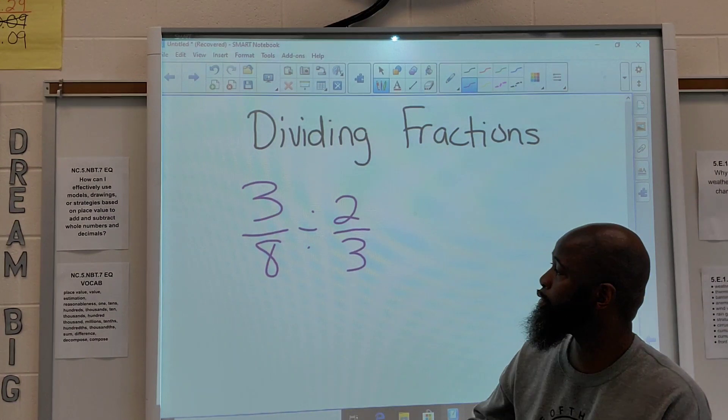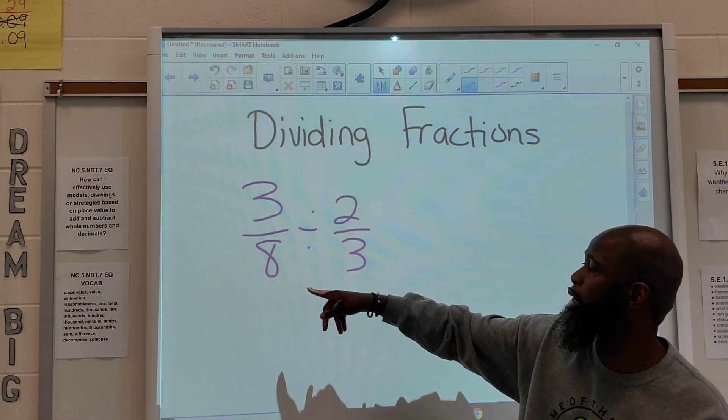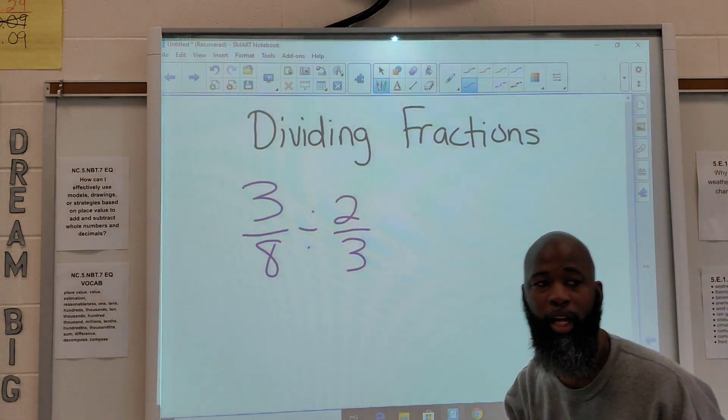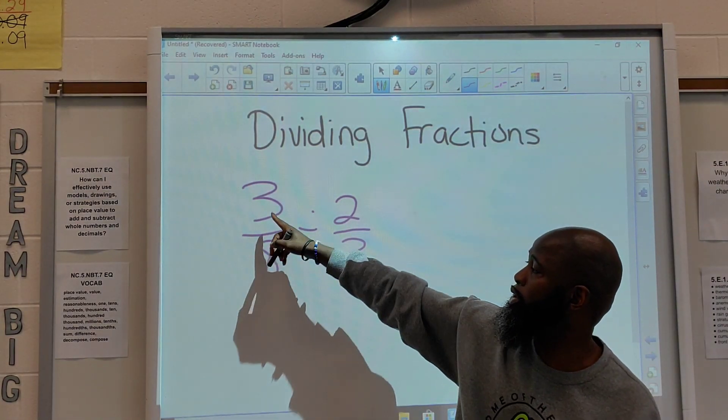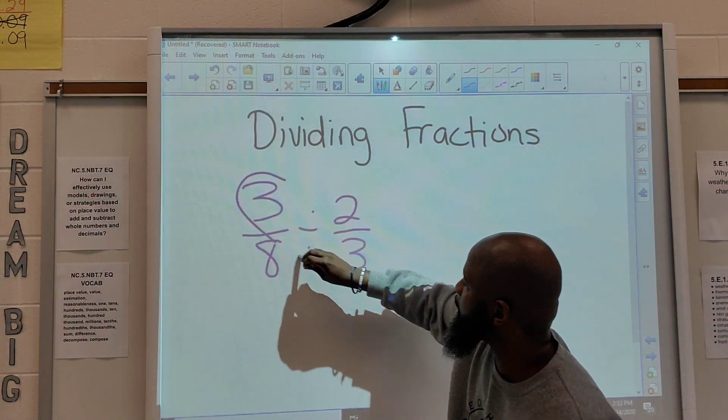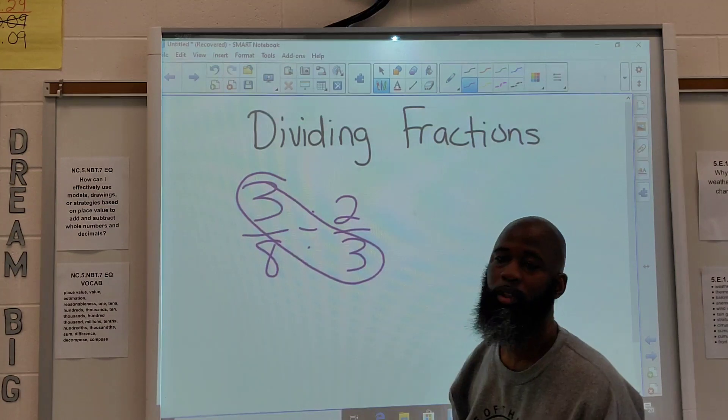So, for example, we have two fractions: 3 eighths divided by 2 thirds. Now, when I say butterfly, that's what it sounds like, a butterfly. You're gonna cross, so you're gonna take one numerator multiplied by the opposite denominator. So, in this case, we got 3 times 3.